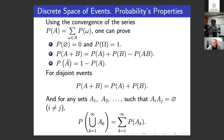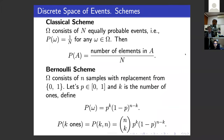If events are disjoint — meaning their intersection is the empty set — then the probability of their union is simply the sum of probabilities, without the minus term. The discrete space of events is the simplest case.